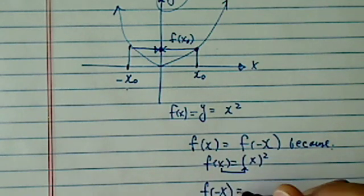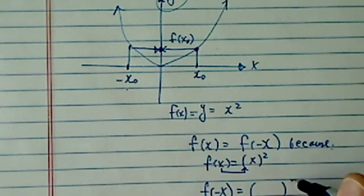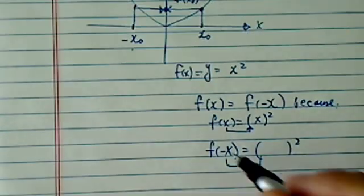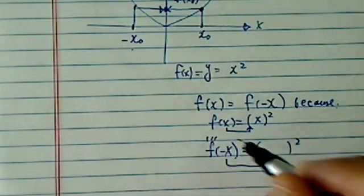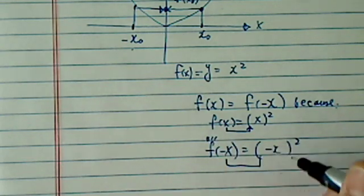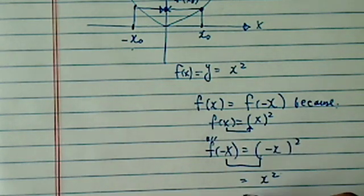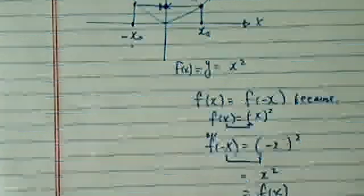f of minus x, whatever I give again, I'm going to square it, because that's what this function, this particular function does, square everything you gave me, equal to x squared, which happened to equal to f of x.